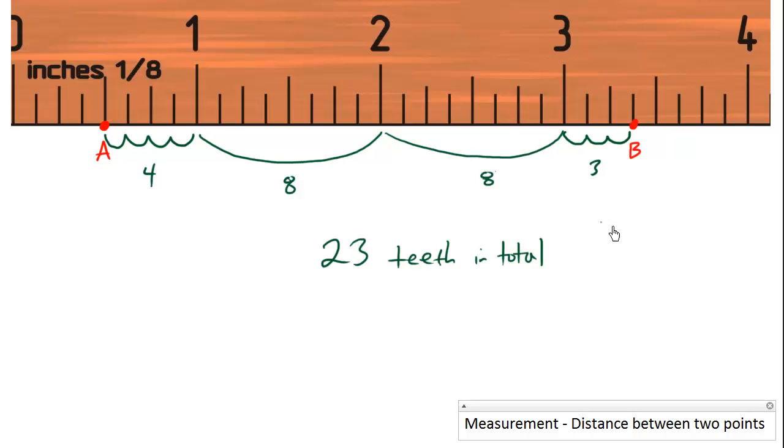We know that each tooth is one eighth of an inch. So our final distance from A to B is going to be 23 times the width of each tooth, which is one eighth. So the final answer is going to be 23 over 8 inches, which is the same thing as, or we can say, two and seven eighths of an inch.